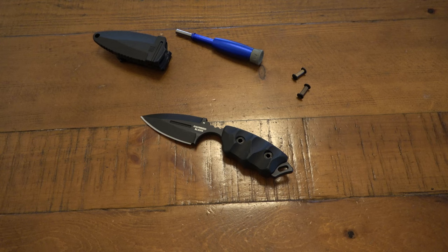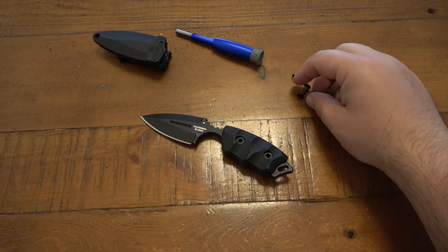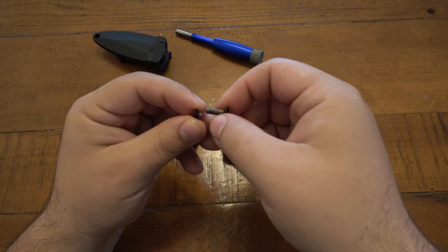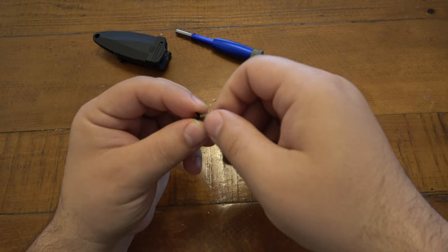But before I show you what's underneath the scales, let me just tell you that was a chore and a half. I don't know why. There's some kind of thread locker on these screws as hardware. It looks white to me. The bottom screw wasn't too hard to take off, right?